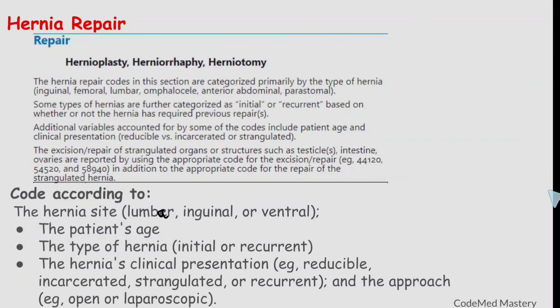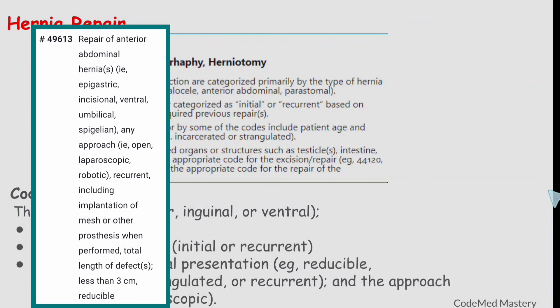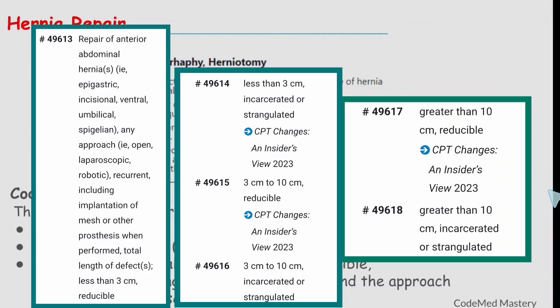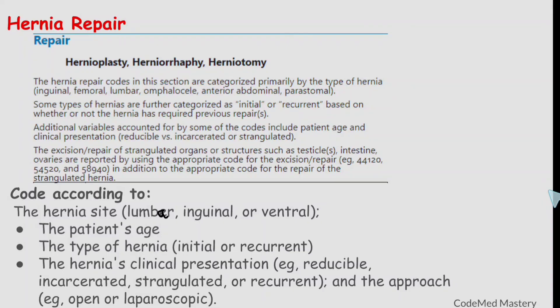For repair of anterior abdominal hernia, recurrent — the parent code 49613 includes implantation of mesh and is for less than 3 cm reducible; 49614 is for less than 3 cm incarcerated or strangulated. Code 49615 is for 3 cm to 10 cm reducible; 49616 is for 3 to 10 cm incarcerated or strangulated. Code 49617 is for greater than 10 cm reducible; 49618 is for greater than 10 cm incarcerated or strangulated. Always check the type of hernia, whether initial or recurrent, clinical presentation, and size.